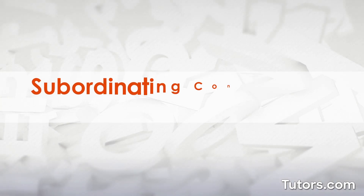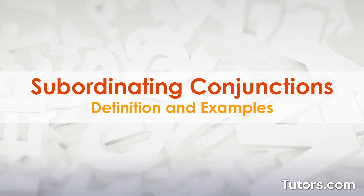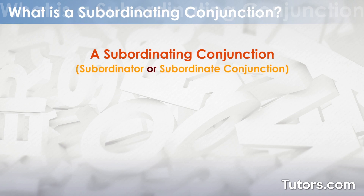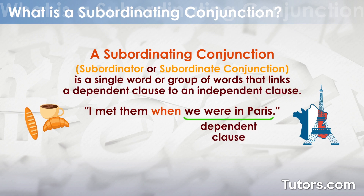What is a subordinating conjunction? A subordinating conjunction, also known as a subordinator or subordinate conjunction, is a single word or group of words that links a dependent clause to an independent clause.